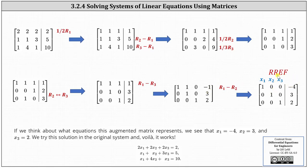Now we have reduced row echelon form, and we can see we have one solution. The first row indicates x1 equals negative 4. The second row indicates x2 equals 3. The third row indicates x3 equals 2. You may want to pause the video and verify that these values do satisfy the system of equations.